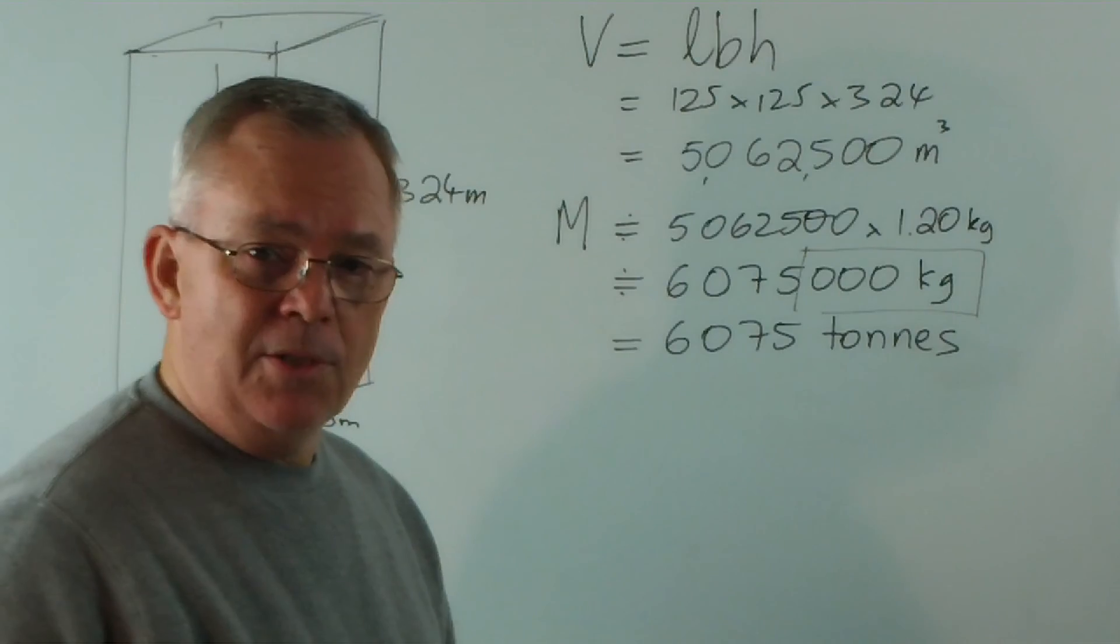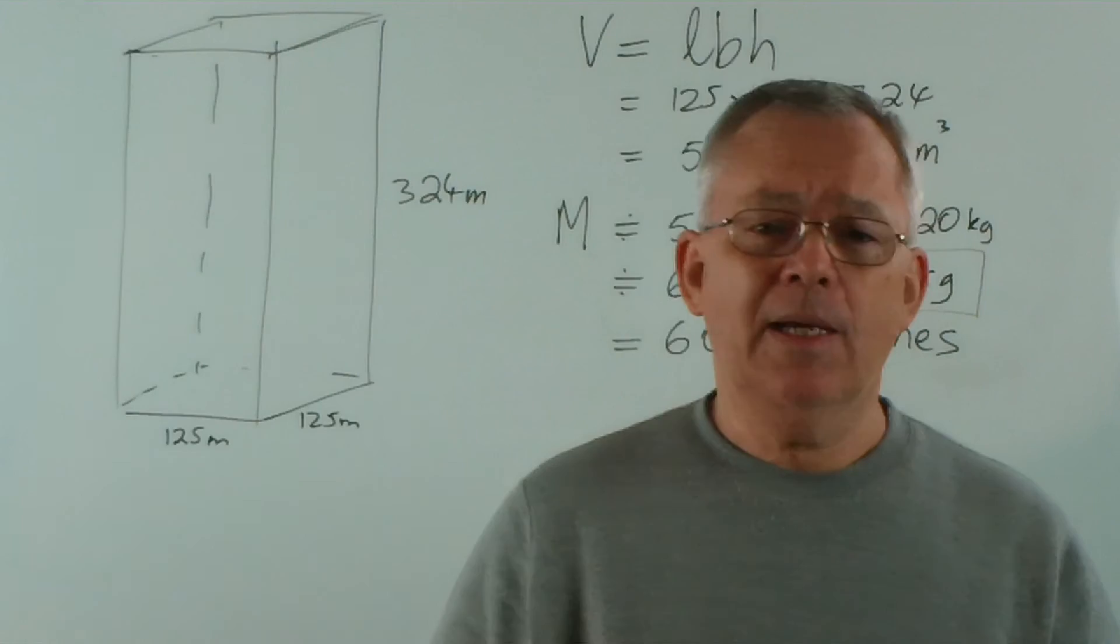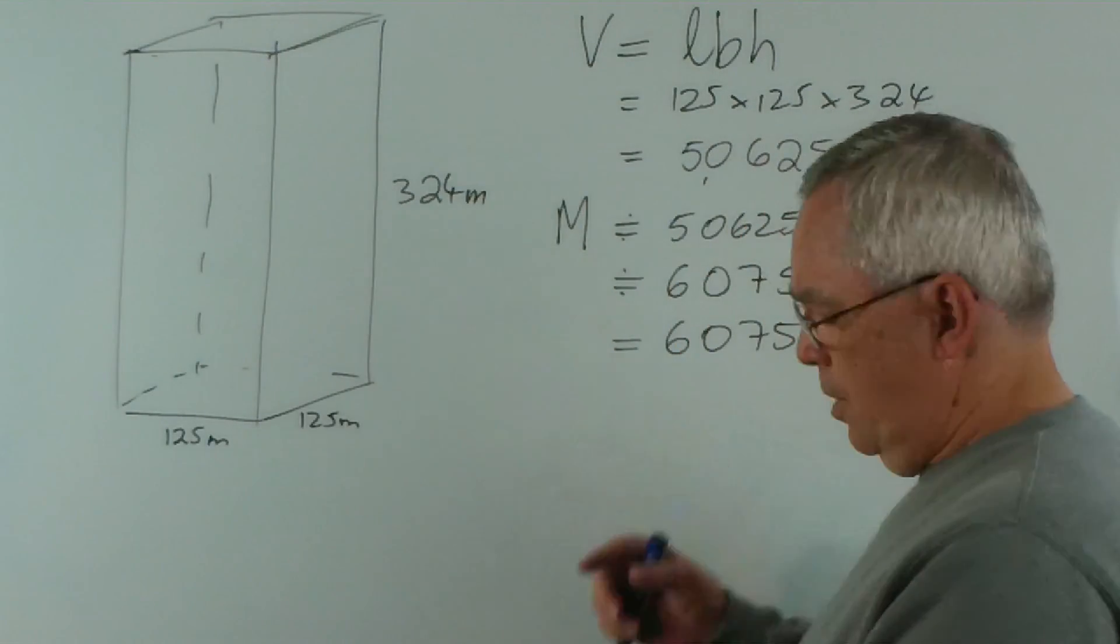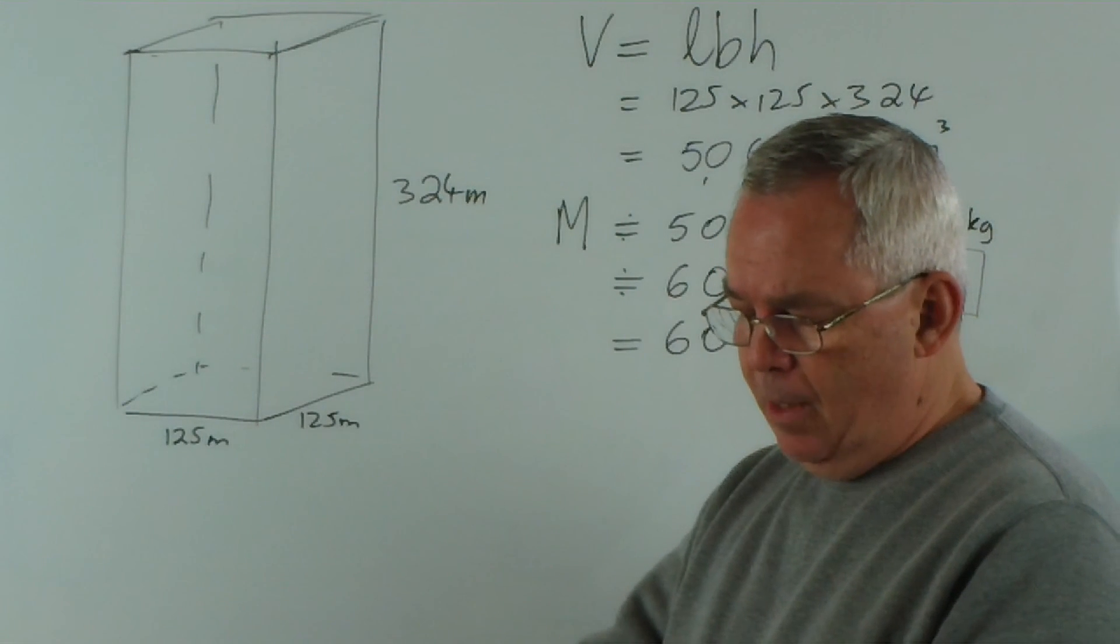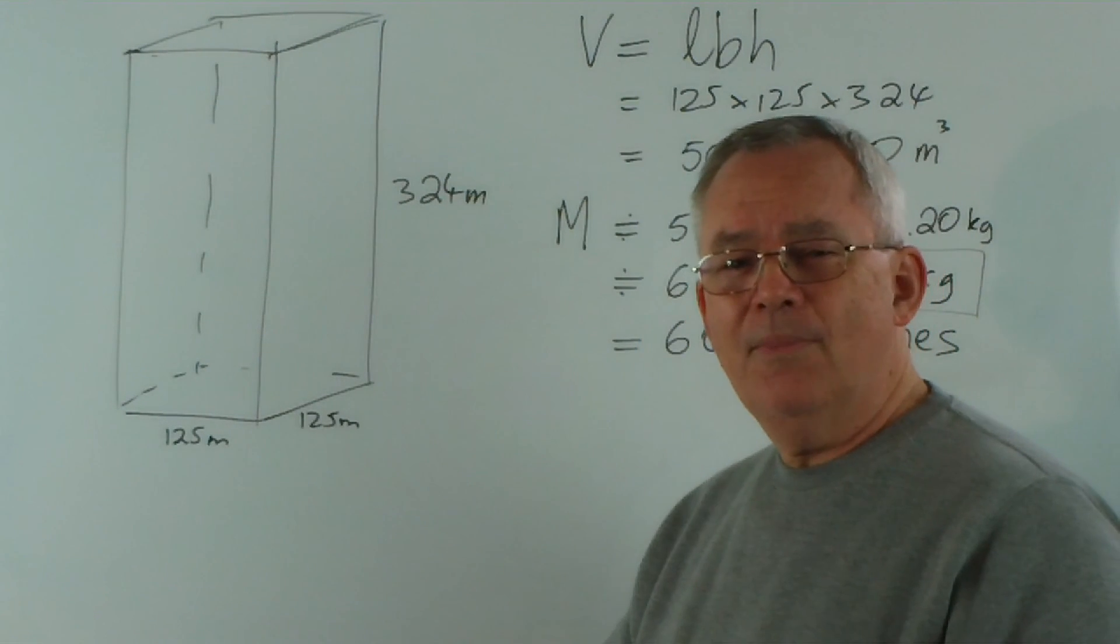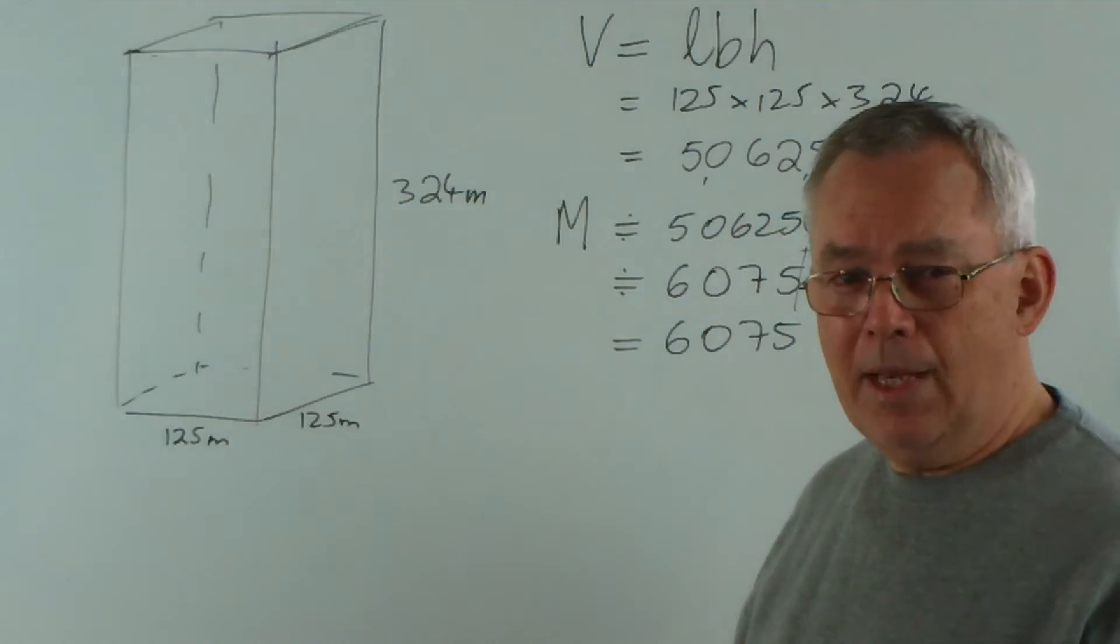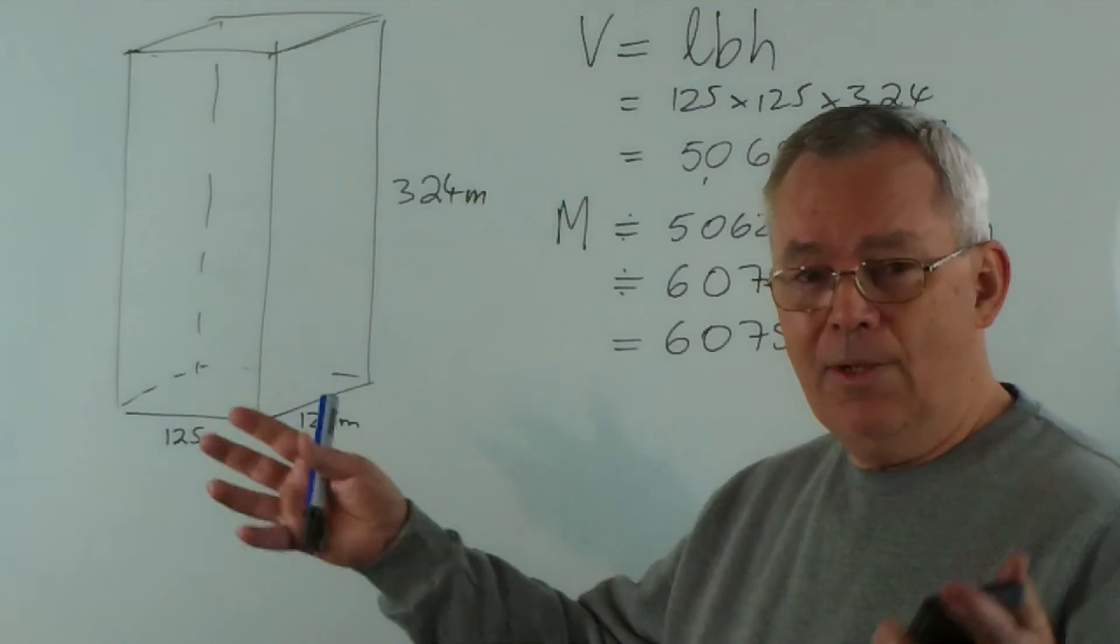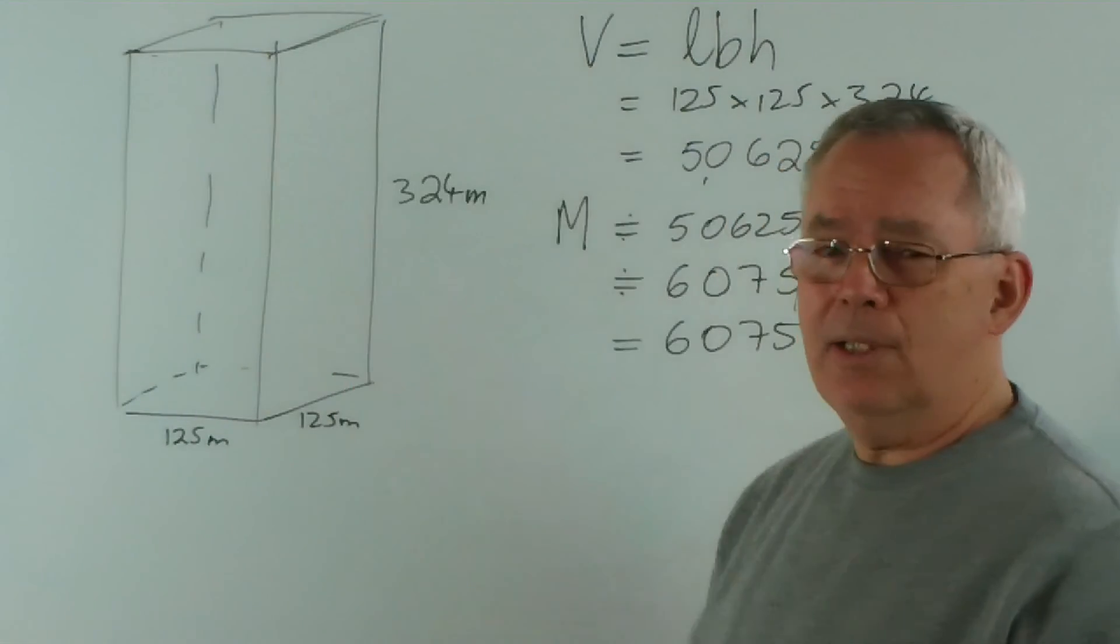Does that surprise you? That's extraordinary! If an average car weighs about 1.5 tons, if I divide by 1.5 I get just over 4,000 cars. So if you can imagine a large parking area covered with 4,000 cars — I suggest you go to a few parking areas and just try and estimate how large an area that would be — that's the mass of the air inside this container.